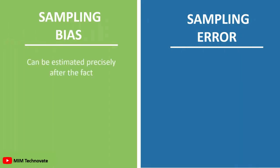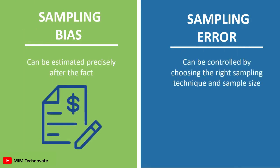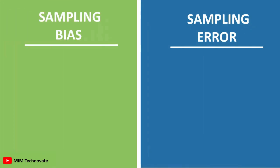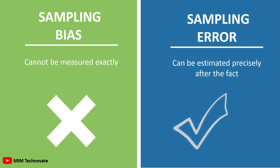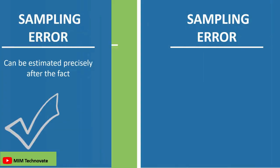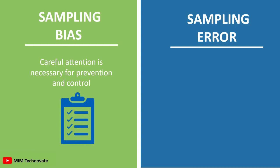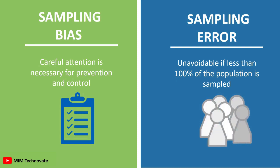Sampling bias can be controlled by choosing the right sampling technique and sample size, while sampling error can be estimated precisely after the fact. Sampling bias cannot be measured exactly, whereas sampling error can be estimated precisely. In sampling bias, careful attention is necessary for prevention and control, while sampling error is unavoidable if less than 100 percent of the population is sampled.